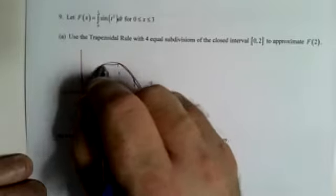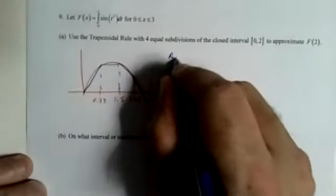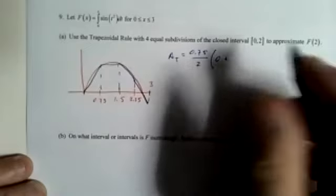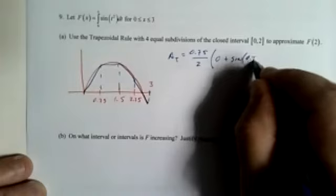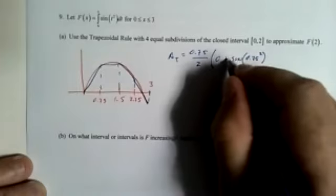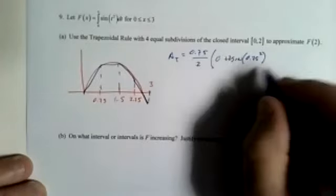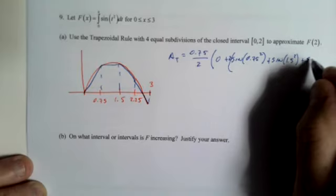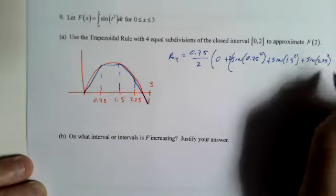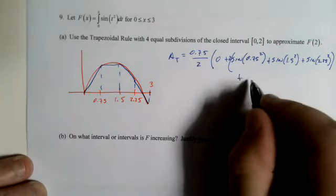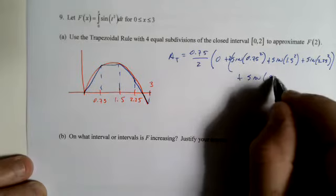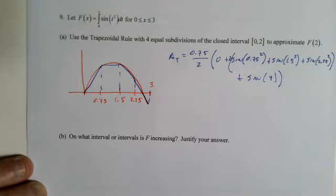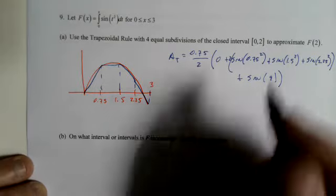That's going to be weird, but it doesn't matter. So area of the trapezoid is, the division is 0.75 over 2. First one plug in 0, we get 0 plus sine of 0.75 squared. 2 plus sine of 1.5 squared plus sine of 2.25 squared plus sine of 9. Oh, for goodness sakes, I didn't read the full question. Naughty, naughty, naughty. From 0 to 2.